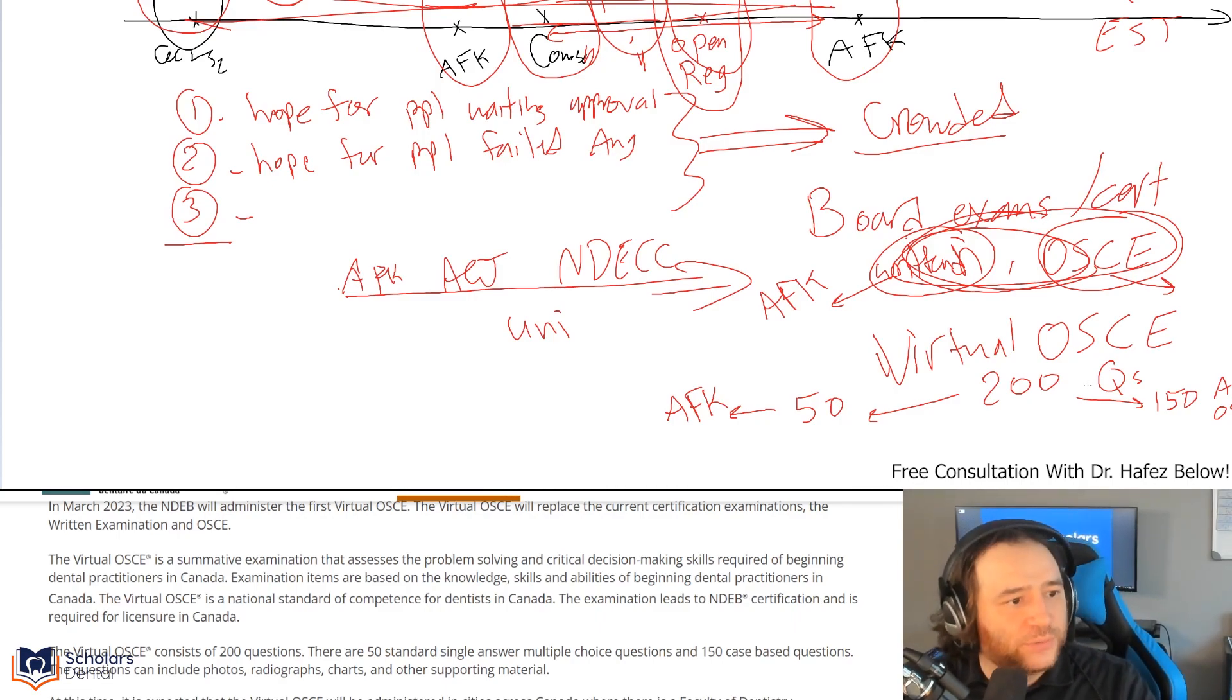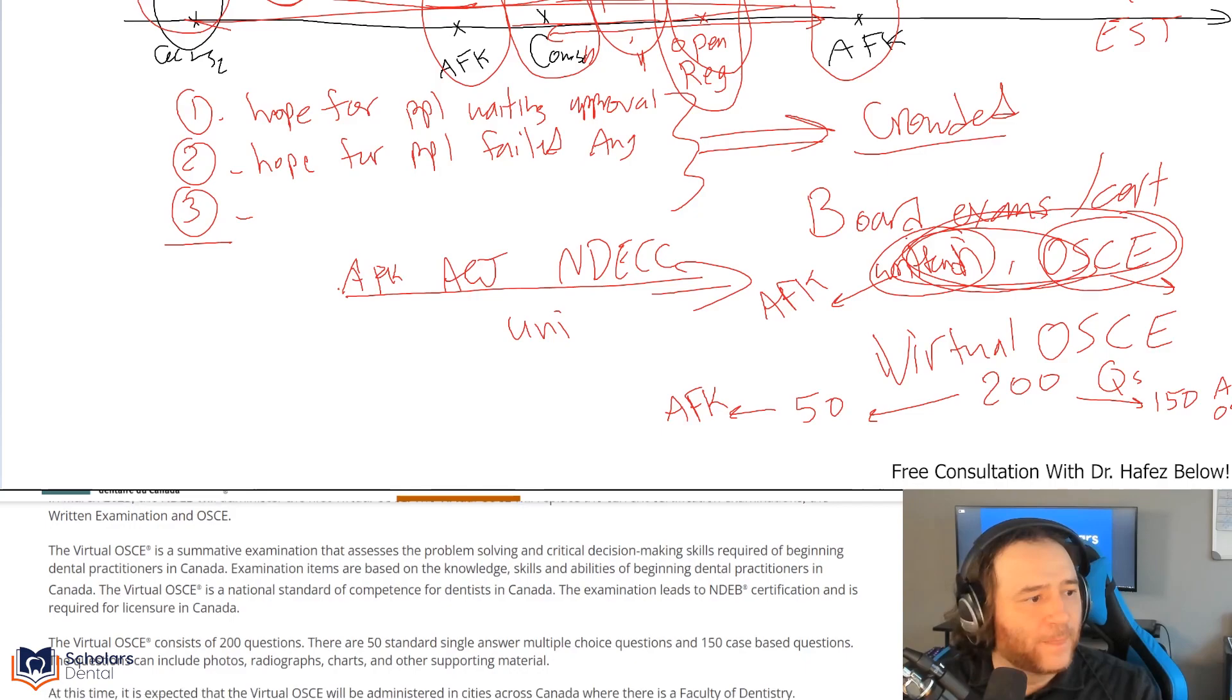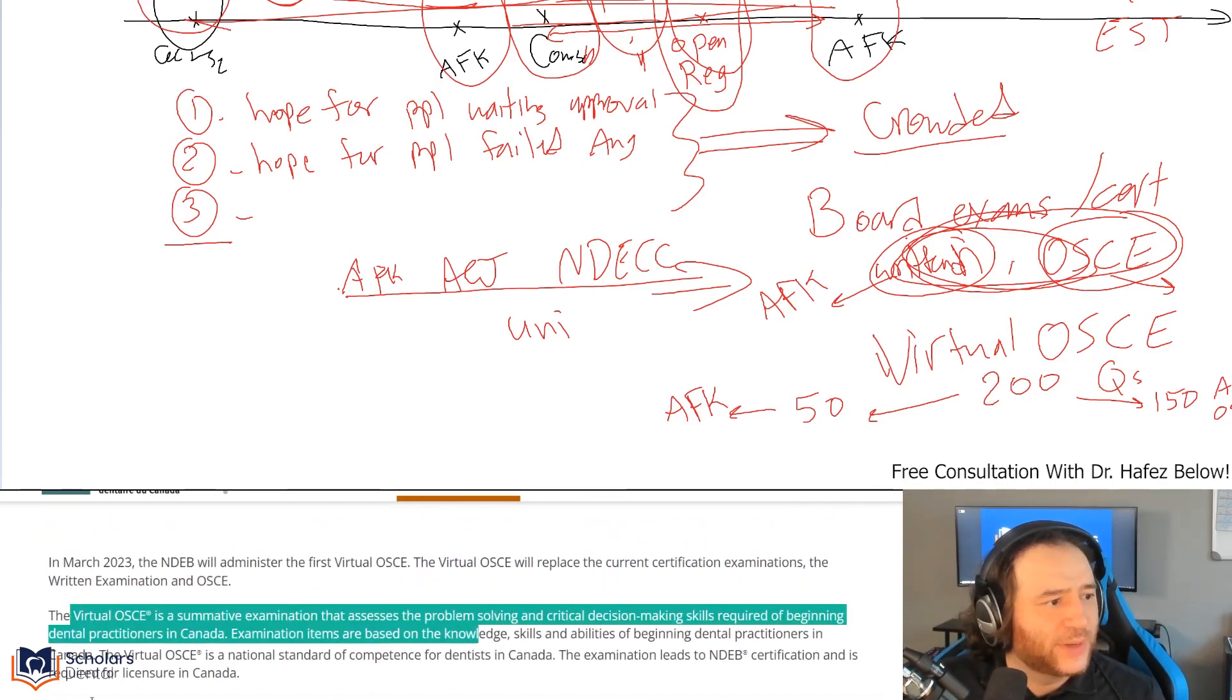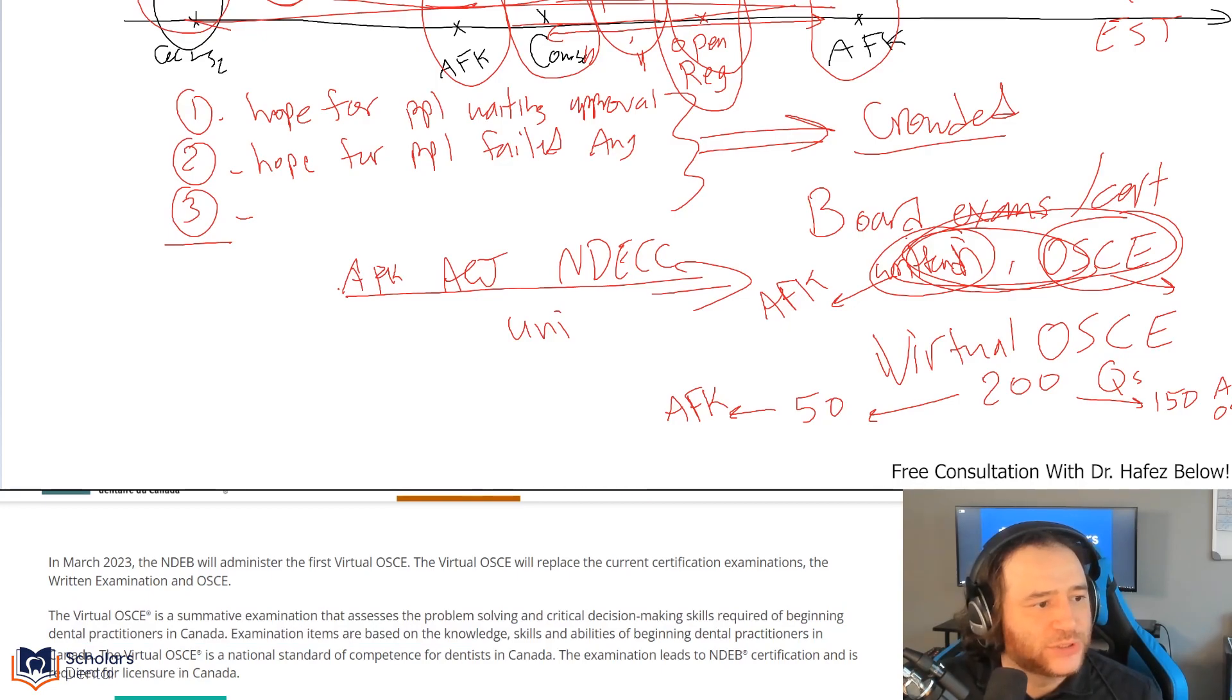The Virtual OSCE consists of 200 questions. There are 50 standard single-answer multiple choice, which means like AFK style, and 150 case-based questions, which means ACJ or OSCE style, which include photos, radiographs, charts—that's ACJ and OSCE.